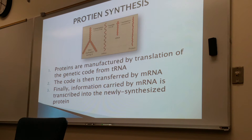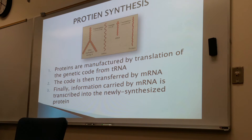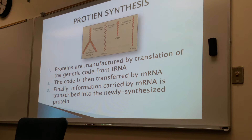Here's the rundown on protein synthesis. Proteins are manufactured by translation of the genetic code. First we start with the DNA, and we need tRNA to translate the genetic code. The code is then transferred by messenger RNA, and finally that information is carried by mRNA and is transcribed into a newly synthesized protein.